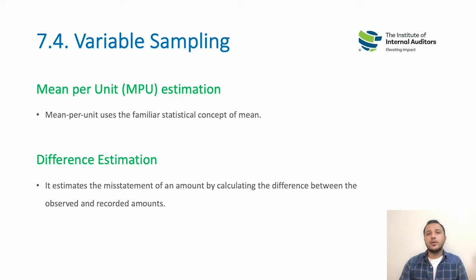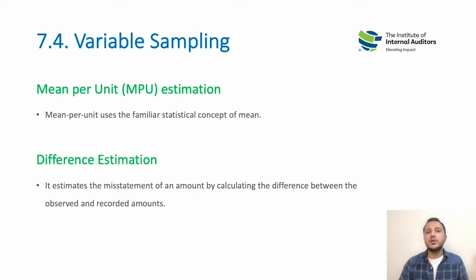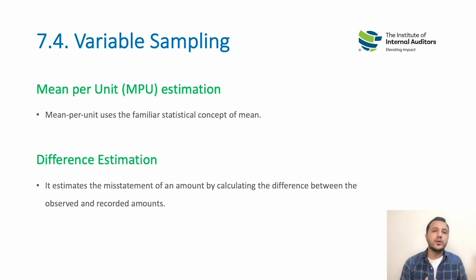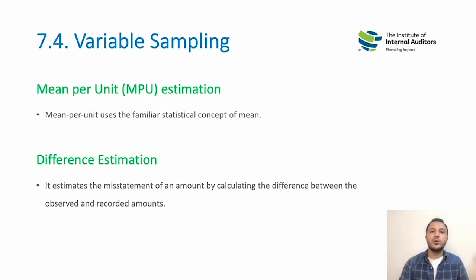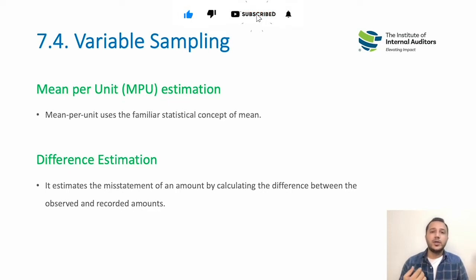For example, we apply variable sampling to different balances such as account receivable. Based on our sampling of a hundred customers out of one thousand, if we find that the account receivable amount is understated by a certain number, we divide that number by the total customers reviewed and then project it to the total population. This method is called mean per unit estimation.